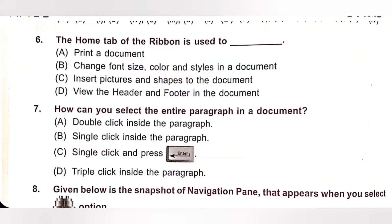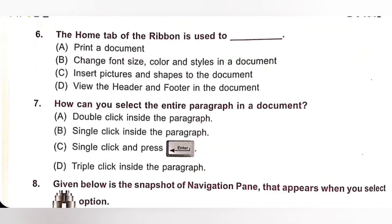Seventh question: How can you select the entire paragraph in a document? A. Double click inside the paragraph. B. Single click inside the paragraph. C. Single click and press Enter. D. Triple click inside the paragraph. To select the entire paragraph in a document, you need to triple click inside the paragraph. Option D is the correct answer.